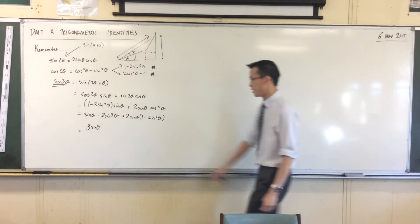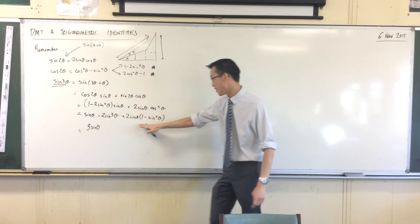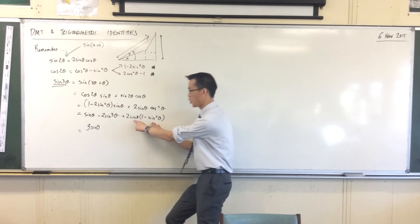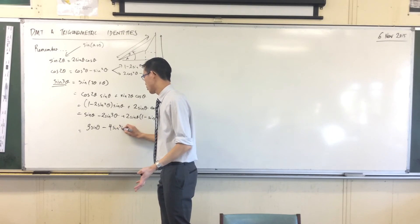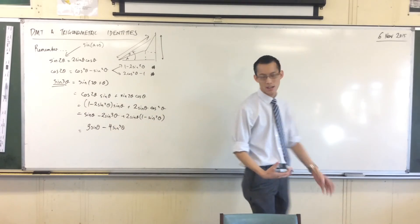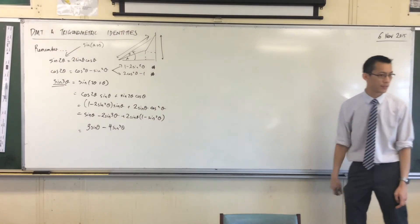And then what else do I have? Minus 4 sine cubed. Yeah, there's minus 2 sine cubed here, and then there will be another minus 2 sine cubed here, right? So hence, minus 4 sine cubed. I suppose I could now at this point factorize out a sine theta, but most people do not, they just kind of leave it there. Okay?